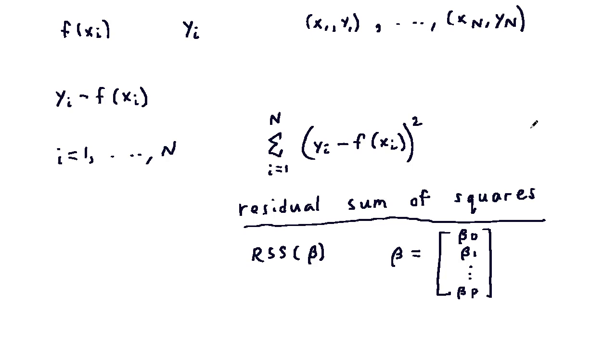We want the residual sum of squares to be as small as possible. Essentially, this means that we want our predicted values f of xi to be as close to the actual value y sub i as possible for each of the pairs xi, yi.